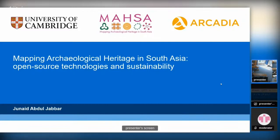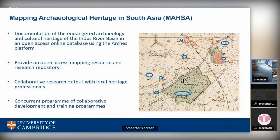The Mapping Archaeological Heritage in South Asia project is mainly based at the University of Cambridge. It is funded by Arcadia and mainly focuses on the documentation of endangered archaeology and cultural heritage of the Indus River Basin, covering most parts of Pakistan and some parts of northwest India. All the data documented will be made available through an open access online database, though with variable levels of access depending on user roles, because the heritage data is quite sensitive in terms of value and preservation.